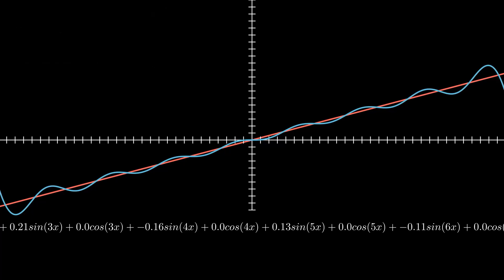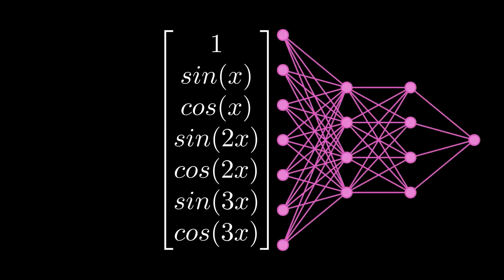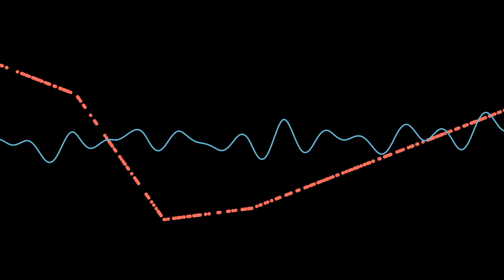I hope you see where I'm going with this. Let's just jump ahead and do what we did before: compute a bunch of terms of the Fourier series, and feed them to a multi-layer network as additional inputs — Fourier features. Note that we have twice as many Fourier features as Taylor features, since we have a sine and cosine.